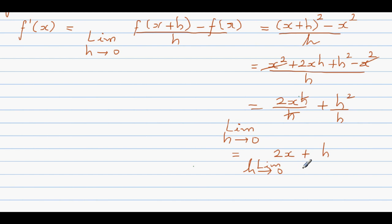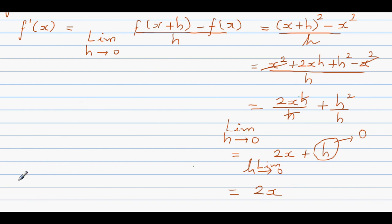Now this is the most subtle part. We have 2x plus h when h is approaching zero — note that h is approaching zero but it is not zero. However, when h approaches zero, h is practically zero, so this becomes 2x. This implies: if y equals f of x equals x squared, then f dash x equals 2x.